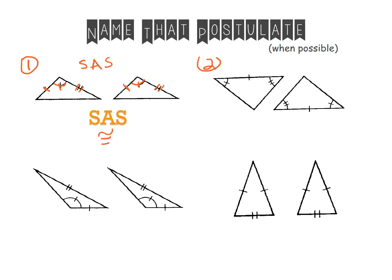If we look at our next set of triangles, the first thing I see is a congruent angle on both of my triangles. The next thing I see would be a congruent side. And the third thing I see is another congruent set of angles. So it looks like I have ASA. The reason the side is in the middle is because the two angles are on the outside of the side — the side is included between the two angles, so I would have ASA. Since ASA is a congruence postulate, those two triangles would be congruent.